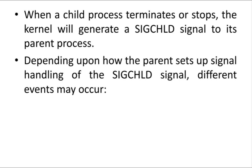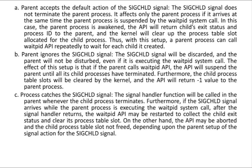When a parent receives the SIGCHLD signal, it should assume that its child process is going to stop or terminate. Depending upon how the parent sets up signal handling of SIGCHLD, different events may occur. Three different types of decisions can be taken by a parent when it receives the SIGCHLD signal.